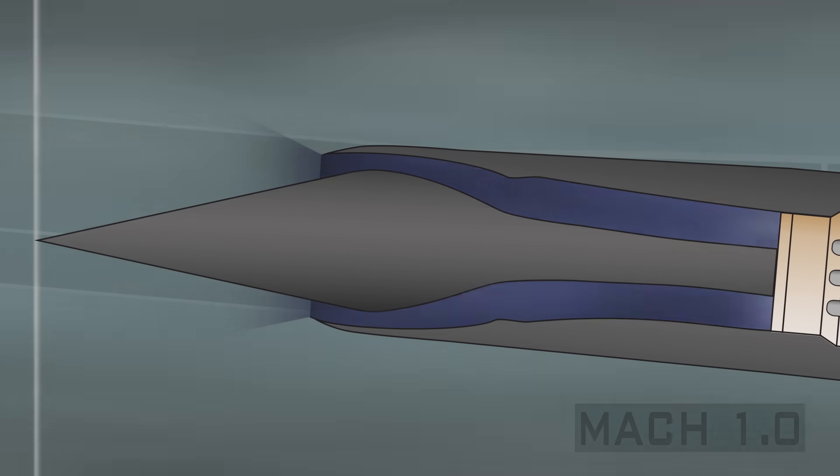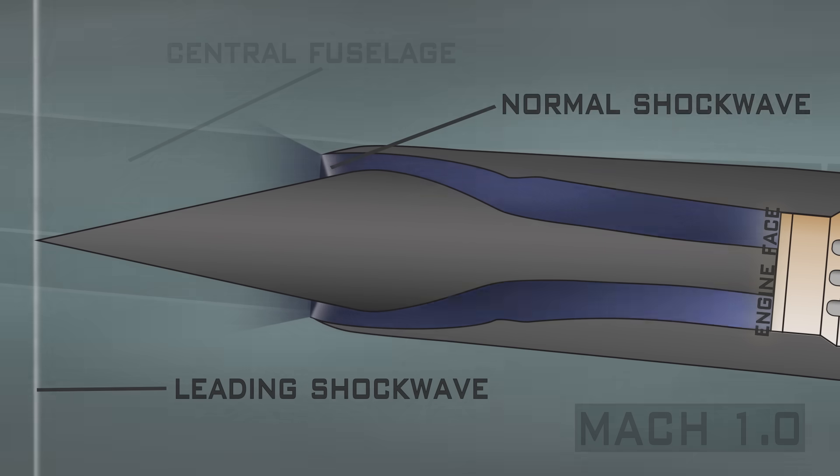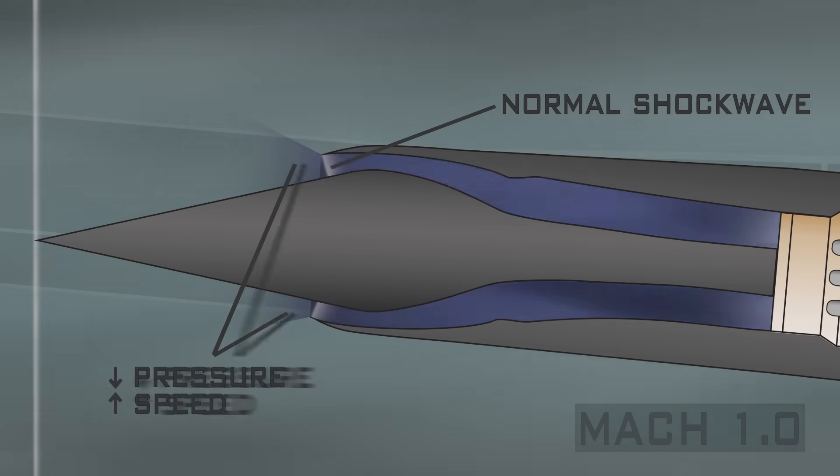At supersonic speeds, the inlet spike takes the pressure of the leading supersonic shockwave off of the engine so that the engine gets the best airflow. Inside the inlet, a second shockwave is formed, called the normal, where the air coming into the nacelle transitions from low-pressure supersonic speeds to high-pressure subsonic speeds.